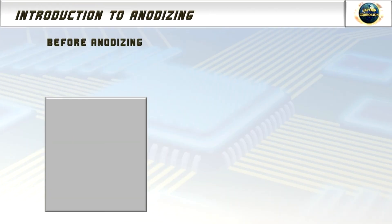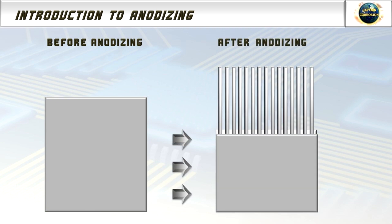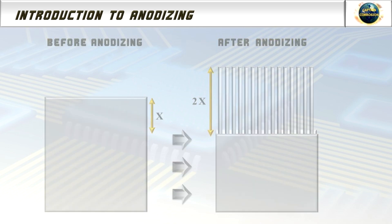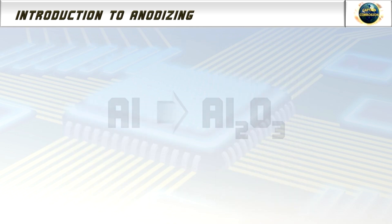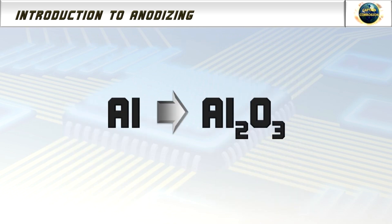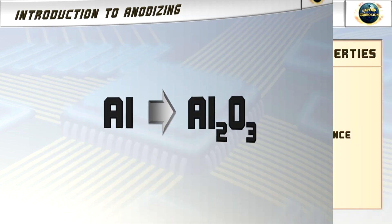When anodizing high-precision aluminum details, it is also important to know that, as a general rule, the dimensions of an anodized detail increase by about 50% of the thickness of the created anodic aluminum oxide layer, due to the volume increase caused by the oxidation of aluminum.